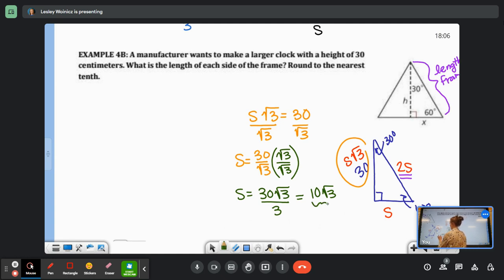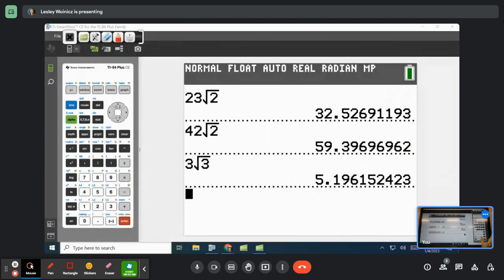That is S. So what I need is 2S, so I just have to double that. So 2 times 10√3 is 20√3. Now it says that I have to round to the nearest tenth, so I'm going to need my calculator for that. So 20 times the square root of 3.